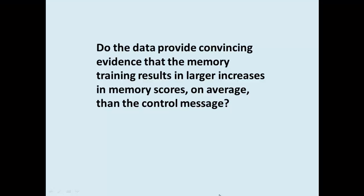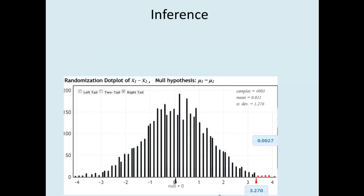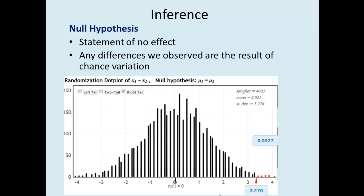To recap, let's go back to our original question of interest. First, do the data provide convincing evidence that the memory training results in larger increases in memory scores, on average, than the control message? Our null hypothesis, statement of no effect, any differences we observed are the result of chance variation. The randomization distribution shows the mean differences we could expect under the null hypothesis if only chance variation were at work, and the directions received had no effect on a student's memory recall score.